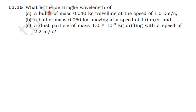From inside the test book, from the topic Dual Nature of Radiation and Matter, question 15: What is the de Broglie wavelength of a bullet of mass 0.04 kg traveling at a speed of 1 kilometer per second? Second, a ball of mass 0.06 kg moving at a speed of 1 meter per second. Third, a dust particle of mass 10 power minus 9 kg moving with a speed of 2.2 meters per second. Let's solve case one first: mass 0.04 kg, speed 1 kilometer per second.